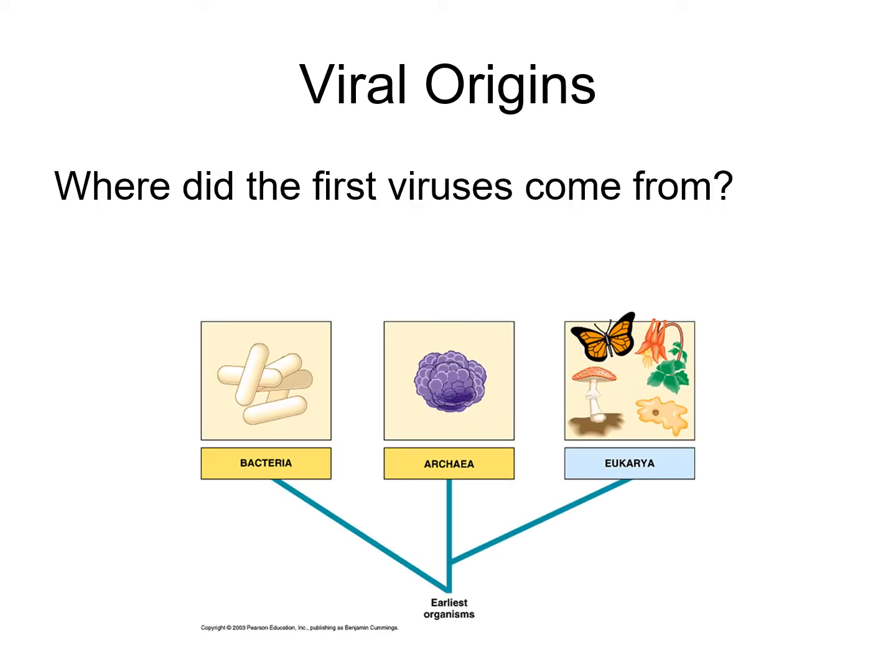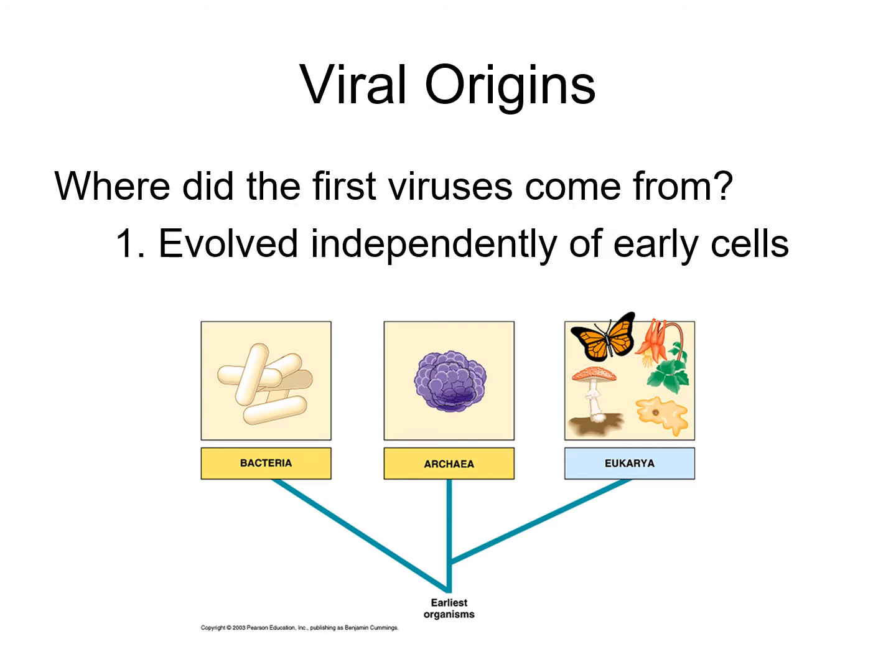So back to our primary question: where did the very first viruses come from? This is an area of active research. We're going to look at three possible hypotheses. Hypothesis number one is that viruses evolved independently of early cells, going all the way back to the origin of life itself.